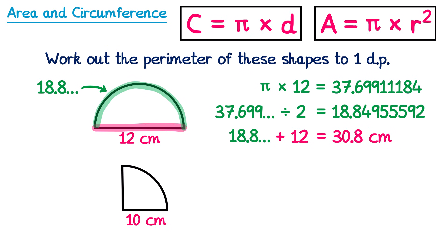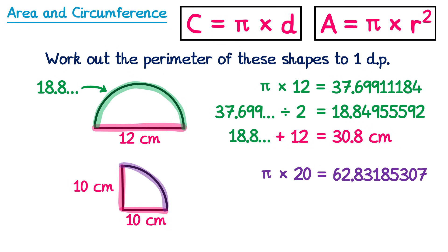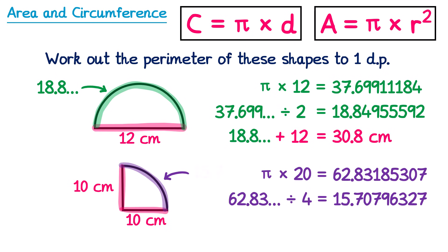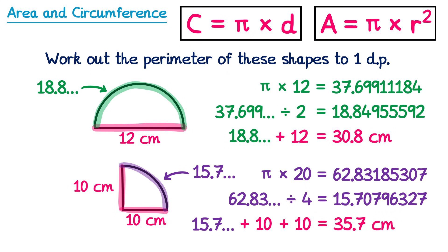For the quarter circle, the perimeter is made up of three pieces: two straight sides and one curved side. Both straight sides are 10, since they're radii of the circle. For the curved purple part, we work out the circumference of the whole circle: pi times the diameter of 20. That gives the full circumference, but we only have a quarter circle, so we divide by 4. The purple arc is 15.7 and so on. Adding 15.7 and the two 10cm lines gives 35.7cm.